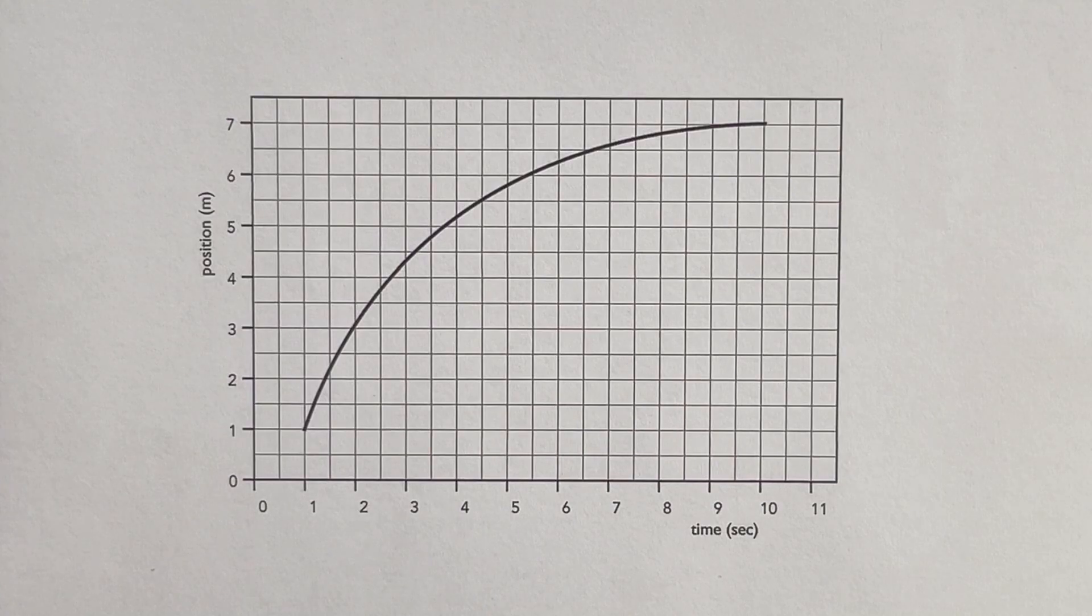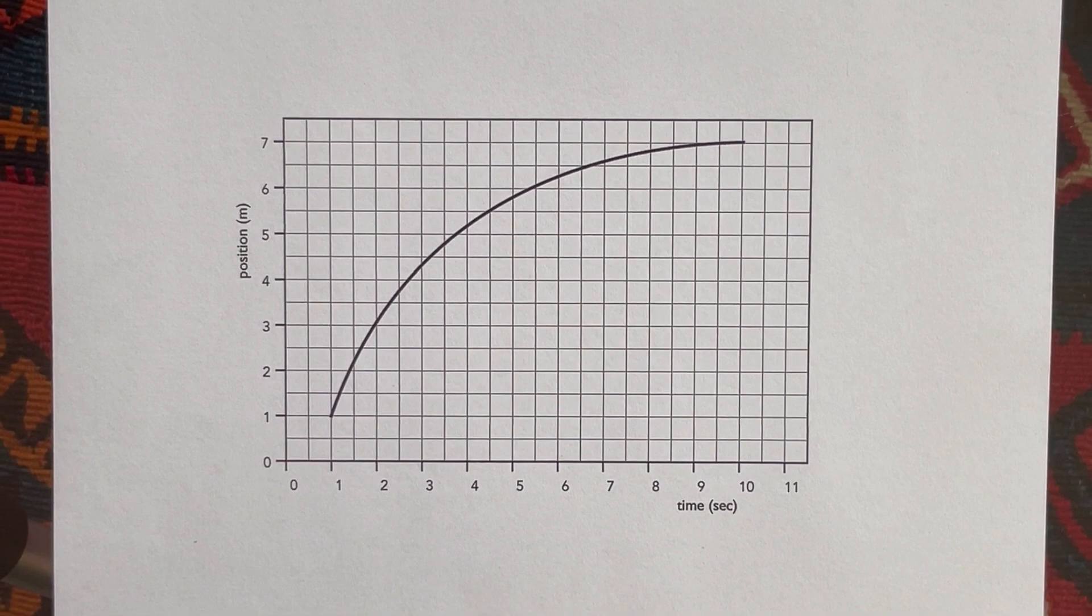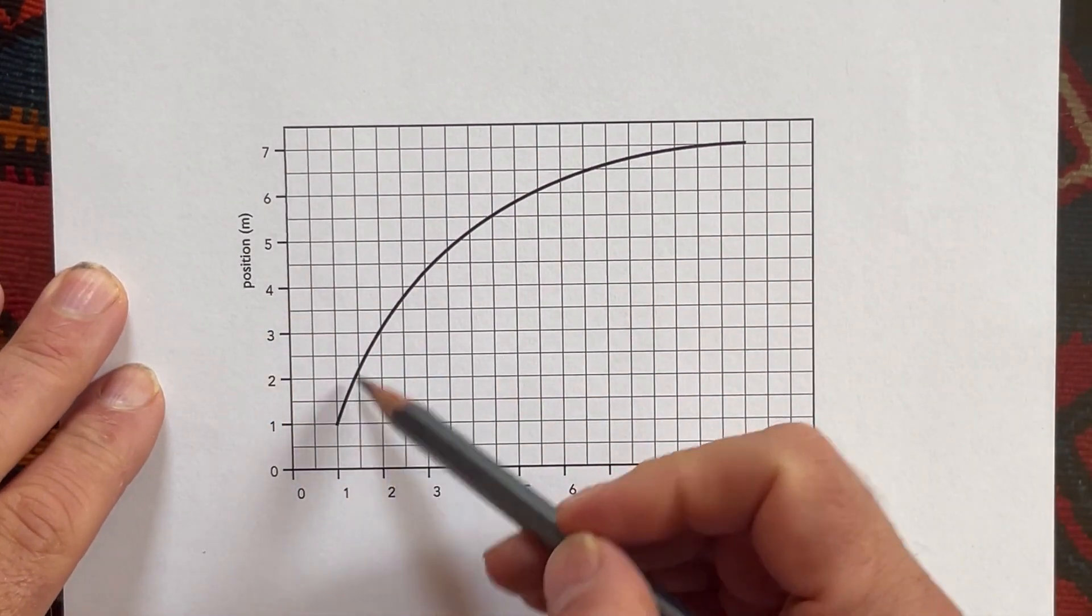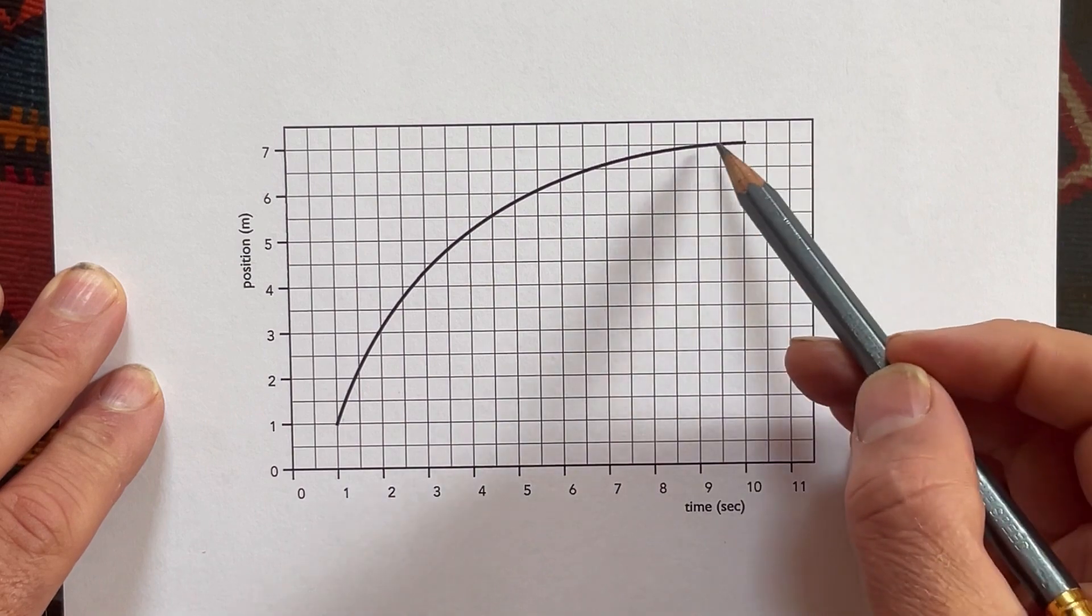Let's go over how to find the velocity when you have a position graph. Here we've got this position graph, and we can tell this is something that's moving away because we're going from down low to up high.